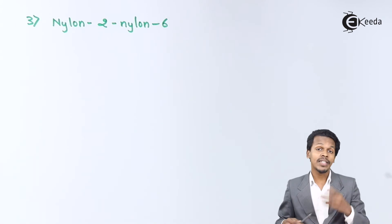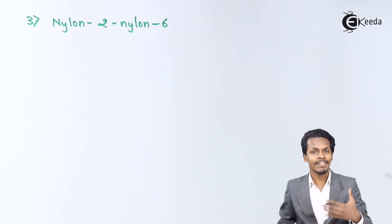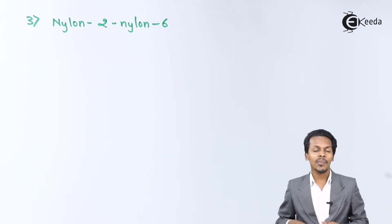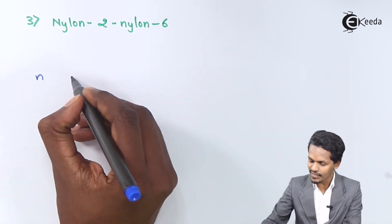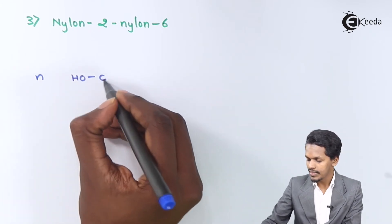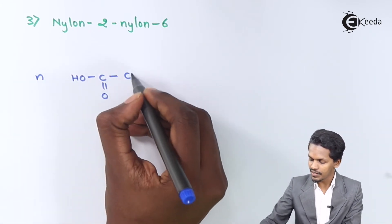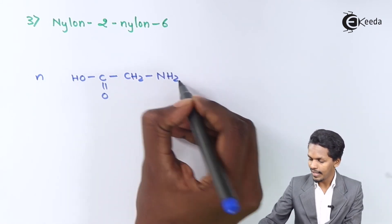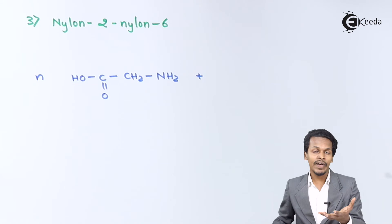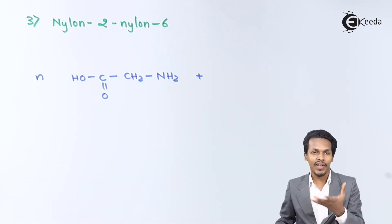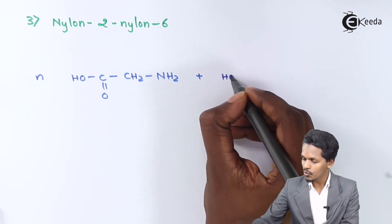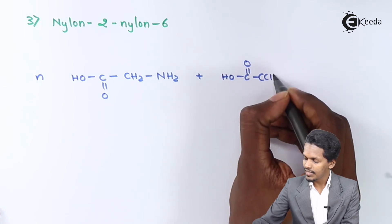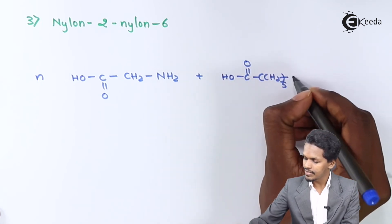The next biodegradable polymer is Nylon 2, Nylon 6. To prepare this, we use glycine as one monomer, with structure HO-C(=O)-CH2-NH2. It is reacted with alpha-amino caproic acid. Caproic acid contains 5 carbon atoms in the methylene chain, with structure HO-C(=O)-(CH2)5-NH2.